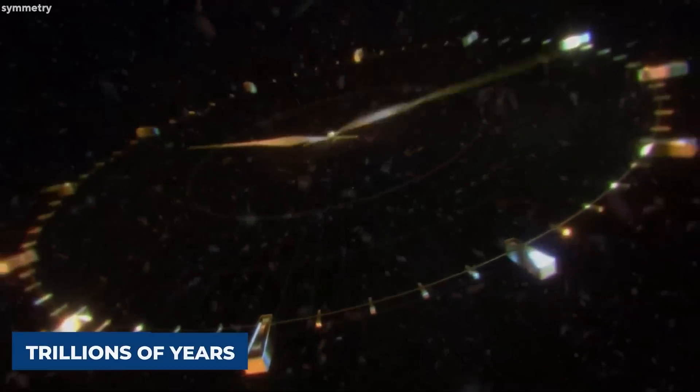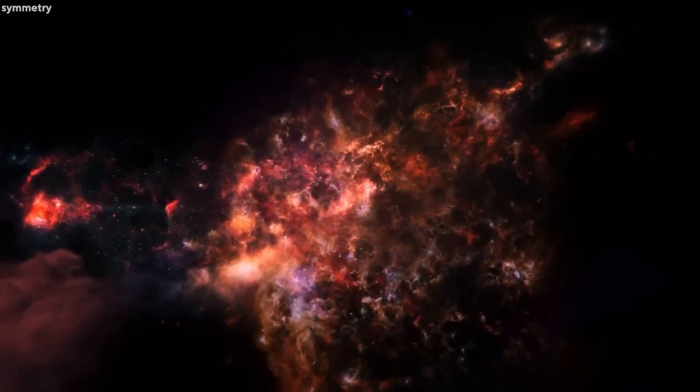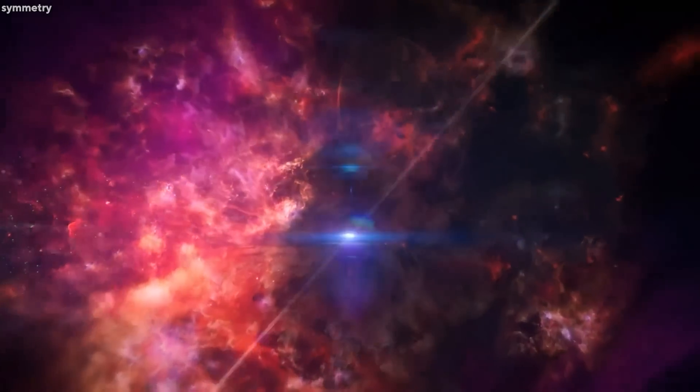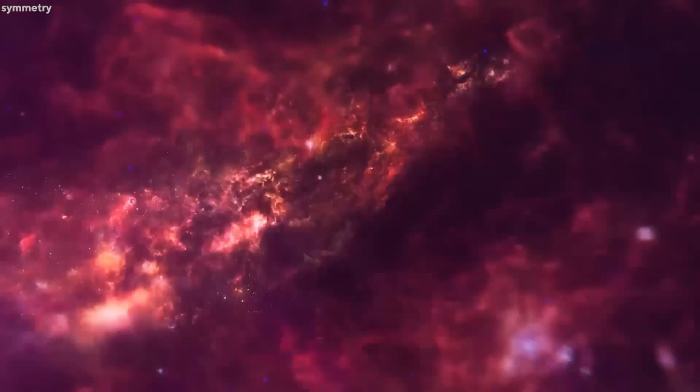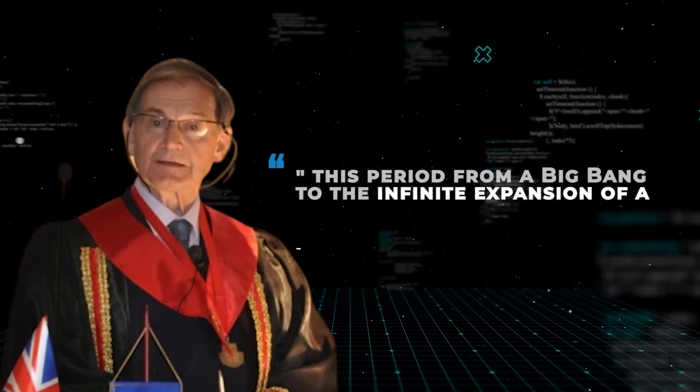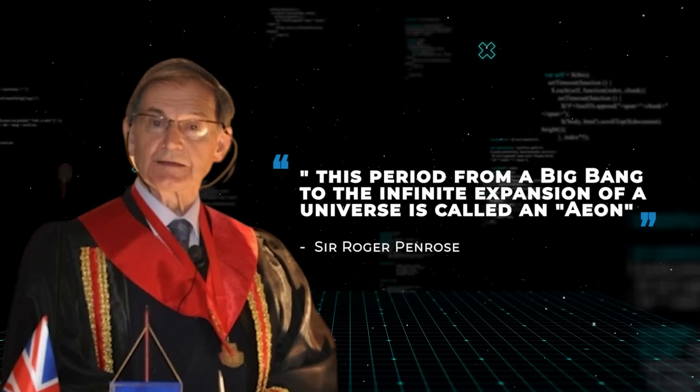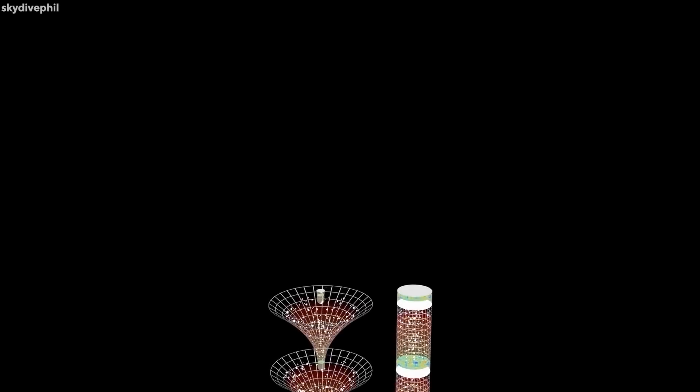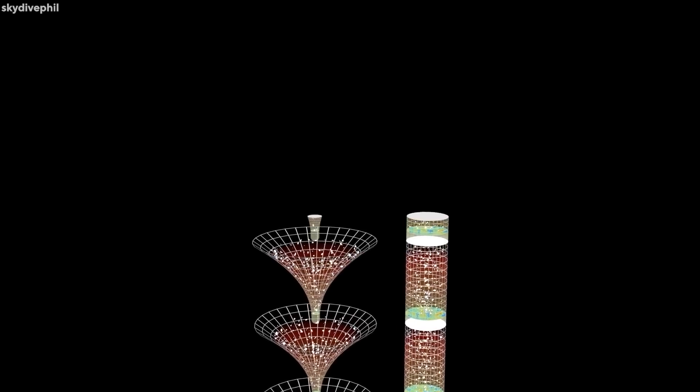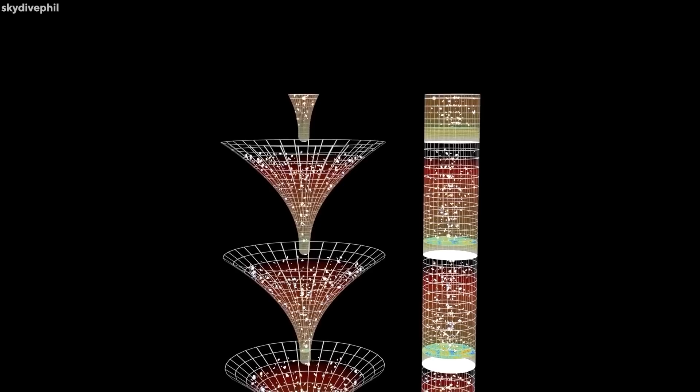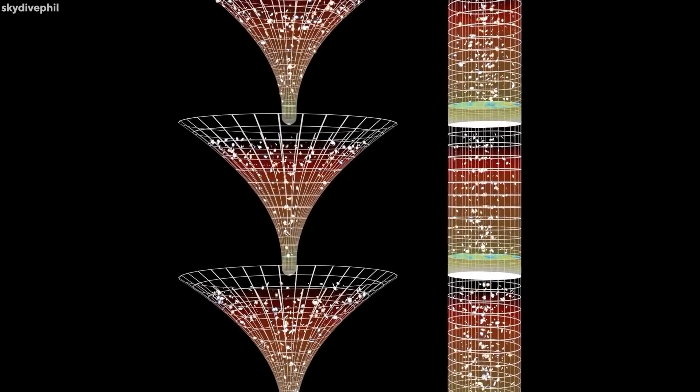Penrose goes on to state that over unimaginable amounts of time, possibly trillions of years, all matter in the observable universe breaks down into photon energy in a cold, expanded universe. According to him, this period from a Big Bang to the infinite expansion of a universe is called an eon. The infinite expansion and oblivion of the previous eon becomes the building block and Big Bang state of the next eon cycle.